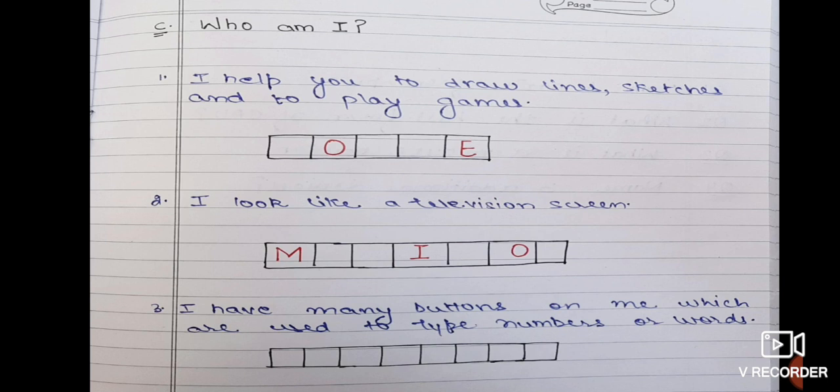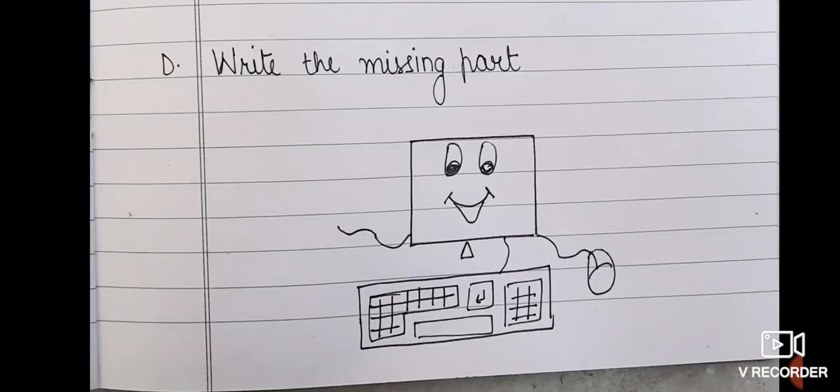Now Part D is write the missing part. Ok, I have drawn the picture of computer, you have to write the missing part.